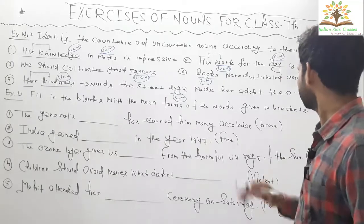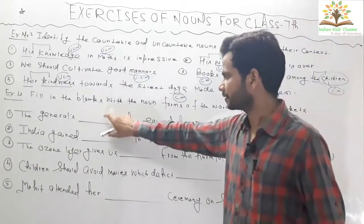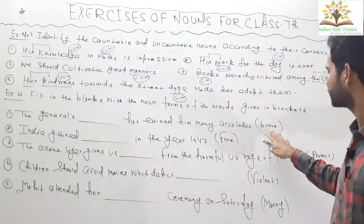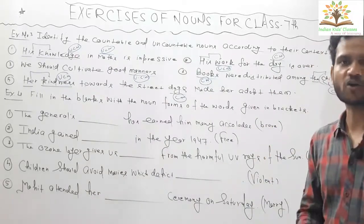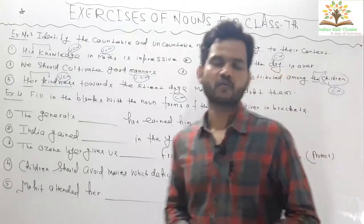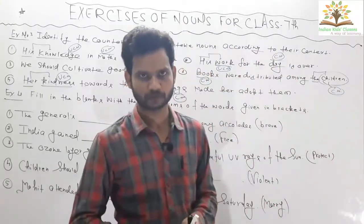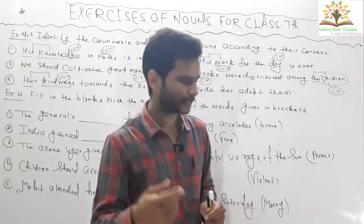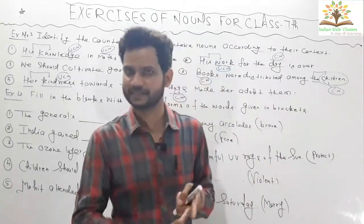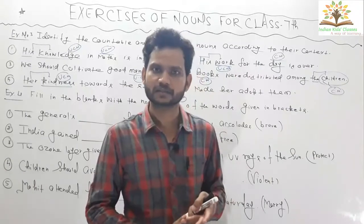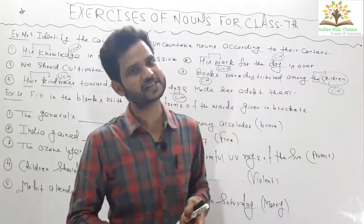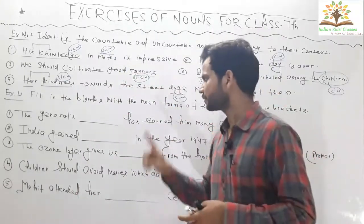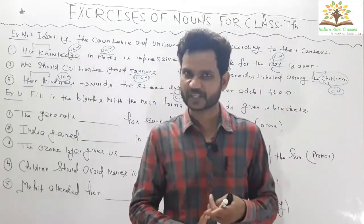Now move on to exercise four: fill in the blanks with the noun form of the words given in brackets. You need to fill in these blanks by making the given words into noun form. Keep in mind that abstract nouns can be made from common nouns, adjectives, and verbs by adding suffixes or prefixes.